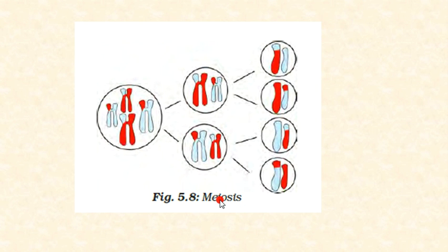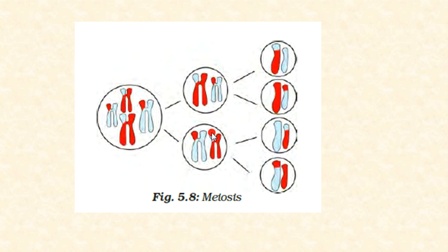In the meiosis diagram, you can see the process in two phases: first one cell becomes two, and then those two divide into four new cells. In the original cell there are two chromosomes, but in the final four daughter cells there is only half that number — one chromosome each. So from four chromosomes total, the result is four cells with one chromosome each.